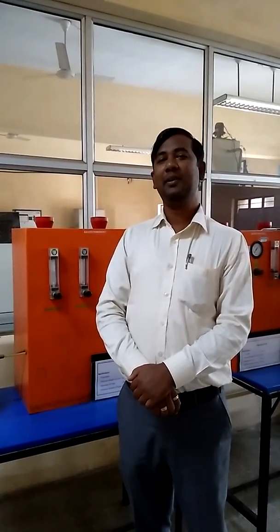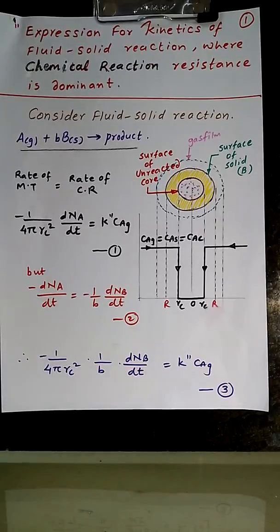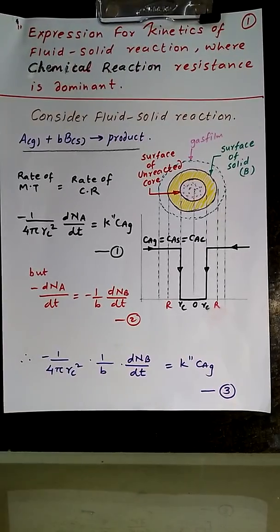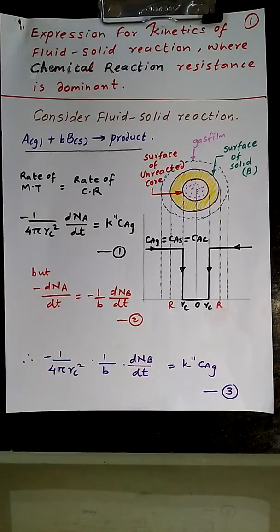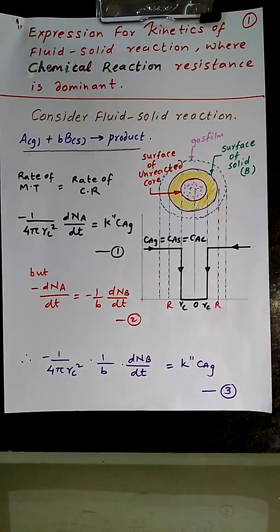Today we are going to study the kinetics of the fluid-particle reaction where chemical reaction resistance is dominated. Consider a gaseous reactant A which is reacting with B. We are already familiar with this reaction: A in gaseous phase plus B times B in solid phase giving product.